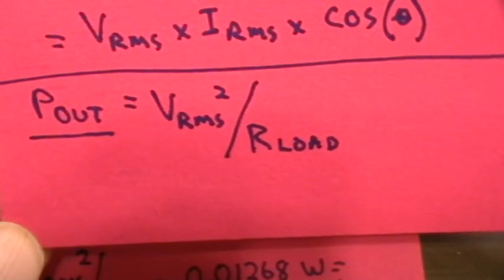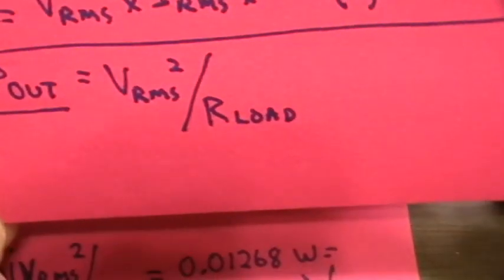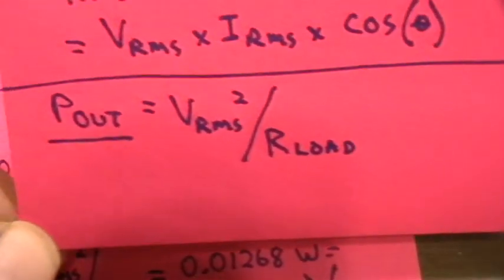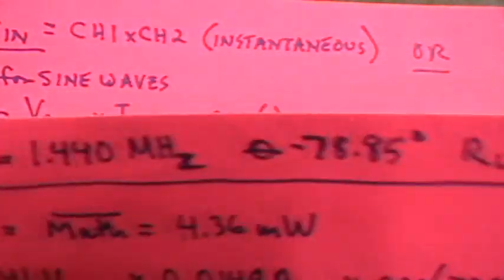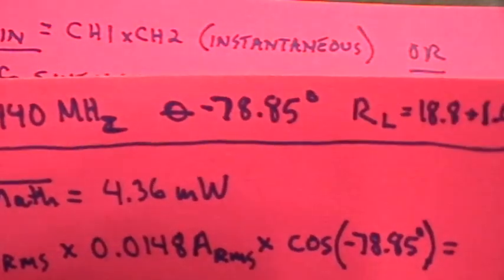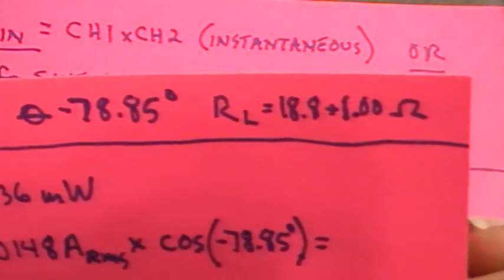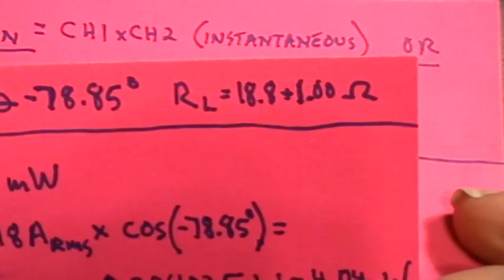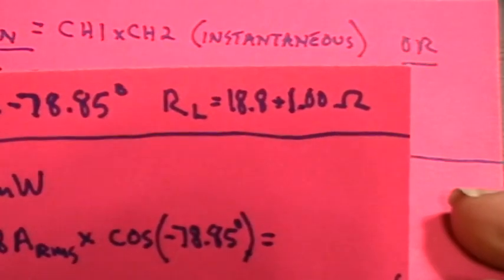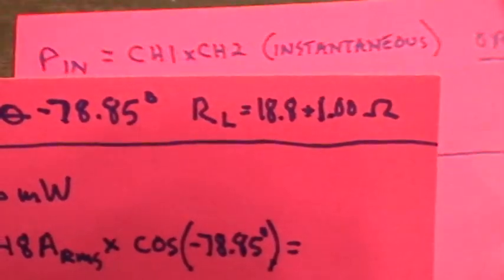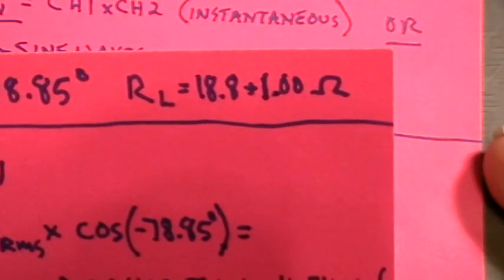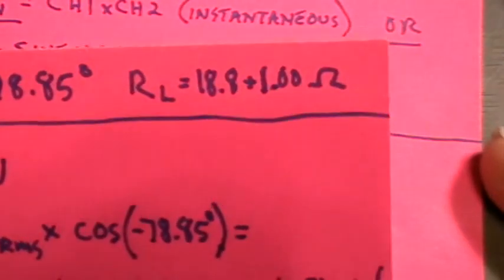Power out is the voltage across the load RMS squared divided by the resistance of the load in ohms. So that's P is equal to V squared over R, that's just Ohm's law. Okay, so now the numbers. We're running at 1.440 megahertz, the phase angle measured by the scope is minus 78.85, current leading voltage. The load resistance is the 18.8 ohms non-inductive precision current viewing resistors directly across the output coil, plus the 1.00 ohm current viewing resistor, which is also included in the RL calculation here. Okay, so because the voltage that I'm measuring is across both of those resistors there.